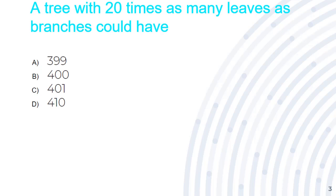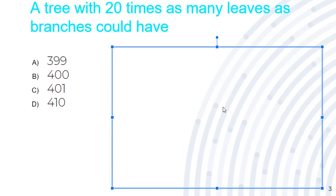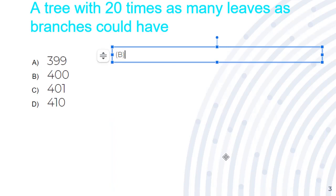The next question is: a tree with 20 times as many leaves as branches could have? This one's a really simple question. The number has to be a multiple of 20. The only multiple of 20 here is B. Our answer would be B.